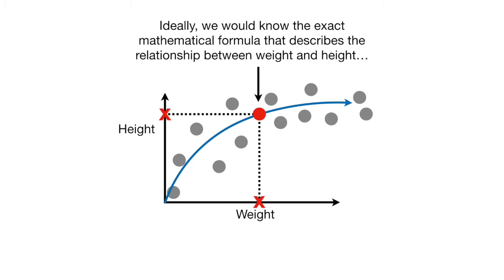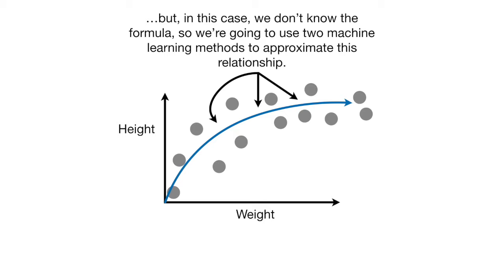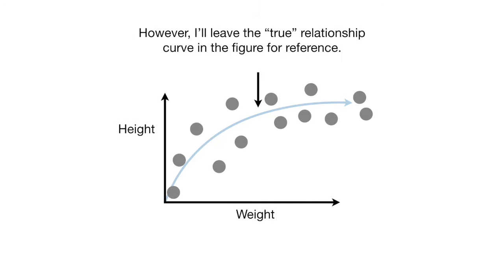Ideally, we would know the exact mathematical formula that describes the relationship between weight and height. But in this case, we don't know the formula, so we're going to use two machine learning methods to approximate this relationship. However, I'll leave the true relationship curve in the figure for reference.